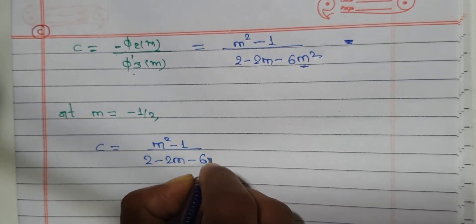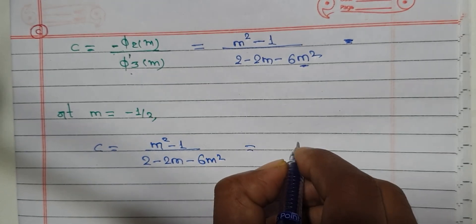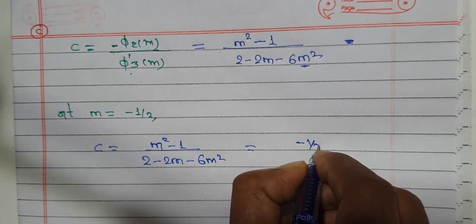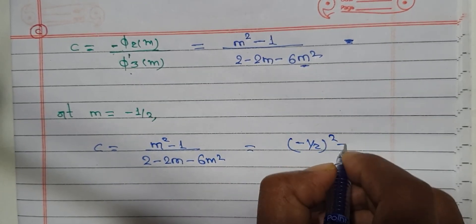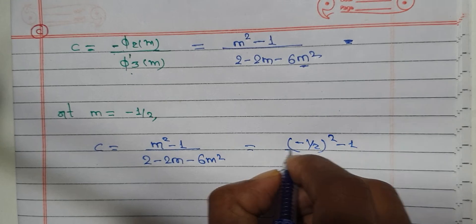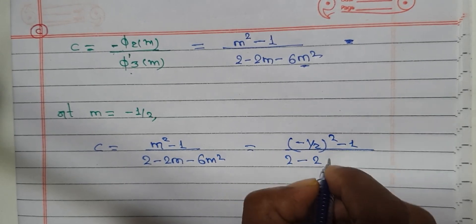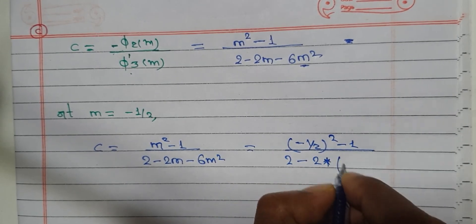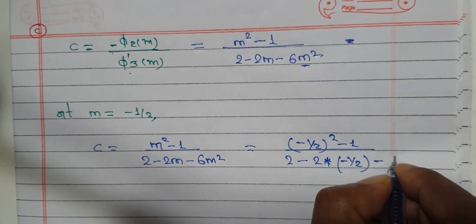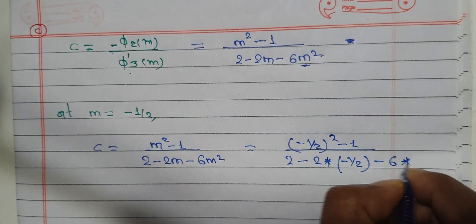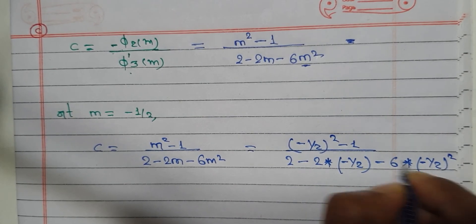For m equals minus one half: m squared minus one by two, minus two into minus one by two, minus six into minus one by two squared.